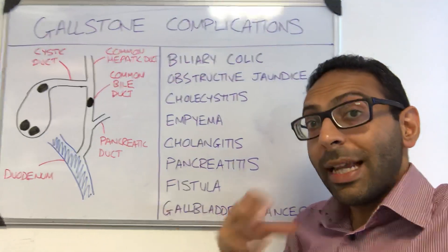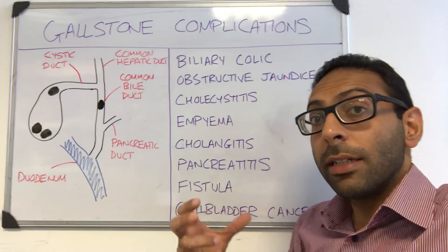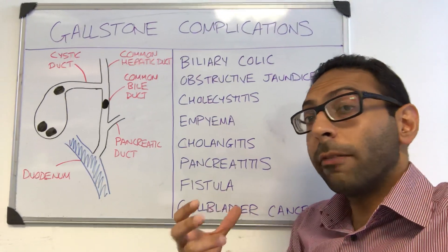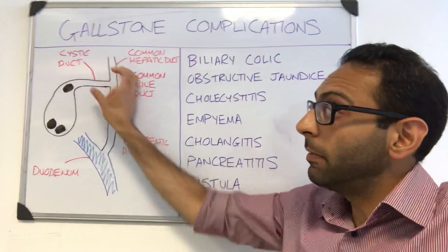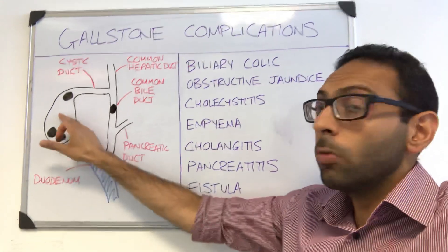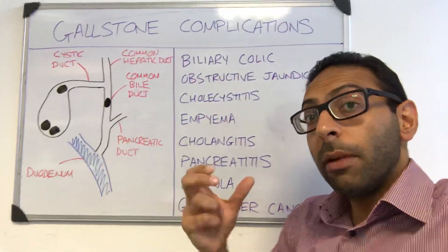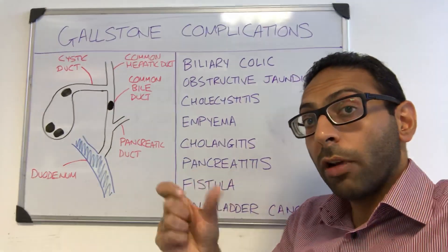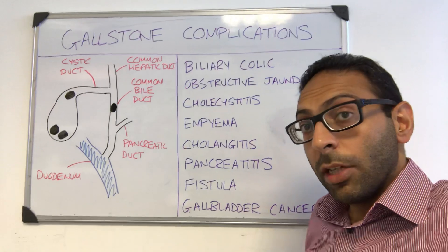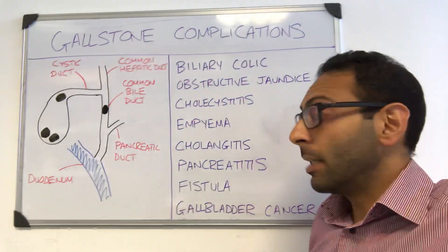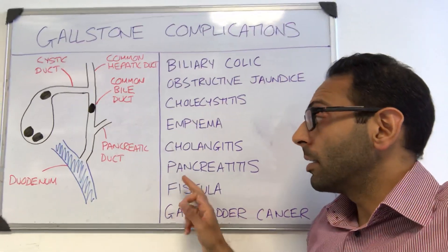Cholangitis, or ascending cholangitis, is an inflammation or infection of the biliary tree — not the gallbladder itself, but the biliary tree. Remember Charcot's triad: that classic triad that occurs in cholangitis.